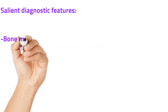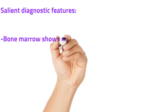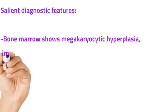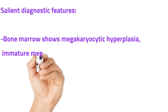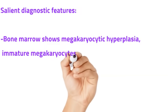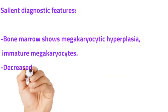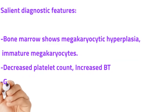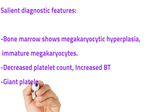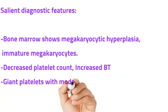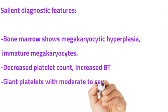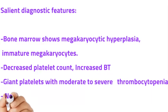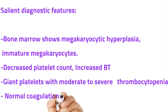The salient diagnostic features are very important. The bone marrow shows characteristic megakaryocytic hyperplasia, and here you will not see normal megakaryocytes — you will see immature megakaryocytes with mononucleated, monolobated nucleus and cytoplasmic budding. Platelet count is decreased and there is increased bleeding time. Giant platelets with moderate to severe thrombocytopenia are usually seen. The coagulation assays are usually normal.